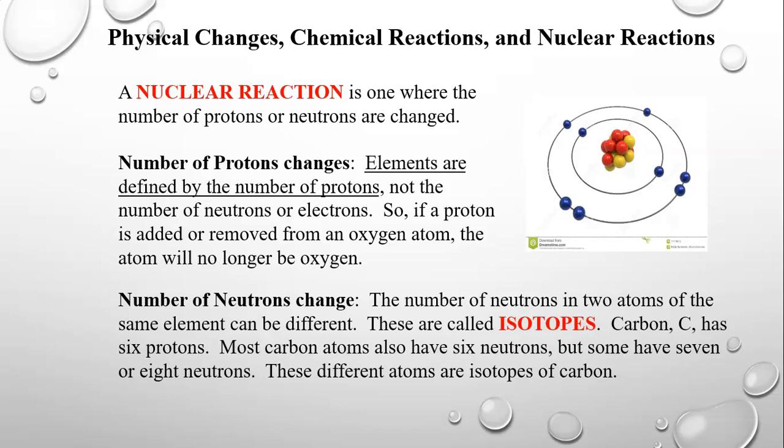The number of neutrons in two atoms of the same element can differ — these are called isotopes. Carbon has six protons; most carbon atoms also have six neutrons, but some have seven or eight. So Dalton wasn't entirely correct that all atoms of the same element are identical. A nuclear reaction changes the nucleus; a chemical reaction rearranges unchanged atoms into new compounds; and a physical change is simply the same substance in different states — ice, liquid water, or vapor.